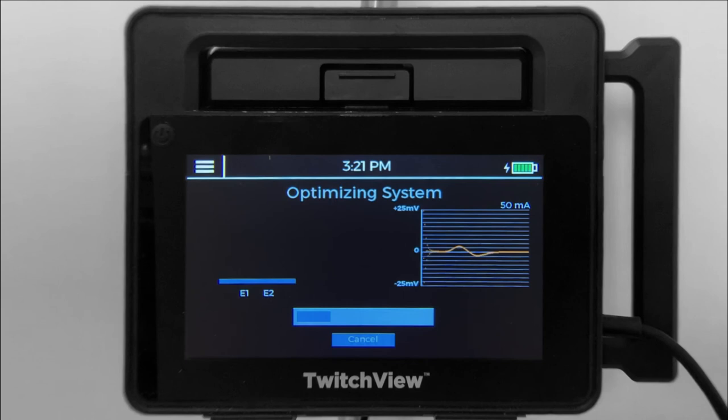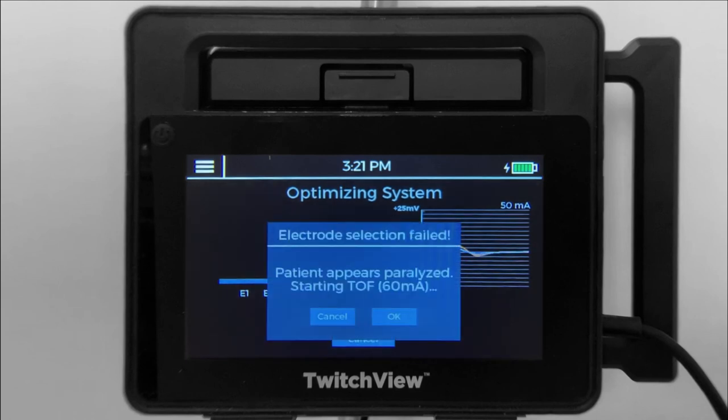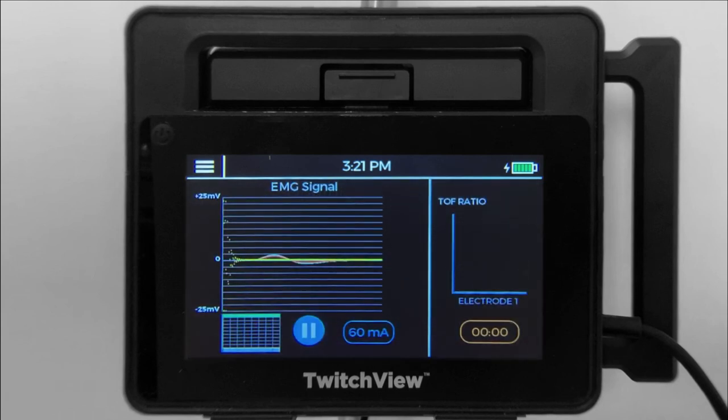If the patient is paralyzed prior to startup, the monitor will default to 60 mA and measure electrode 1. The measurements will be accurate, but you will not see the pre-paralytic blue bar.